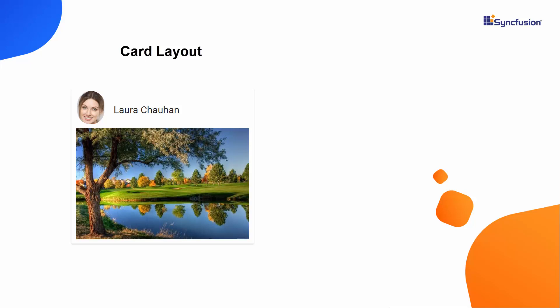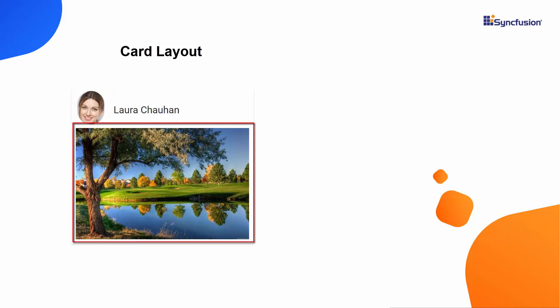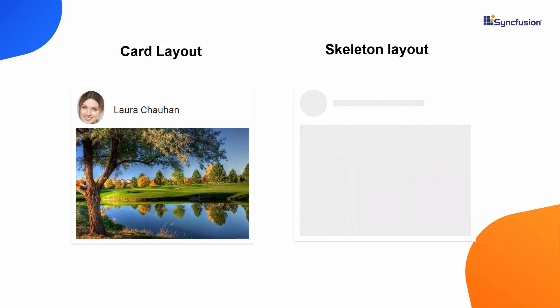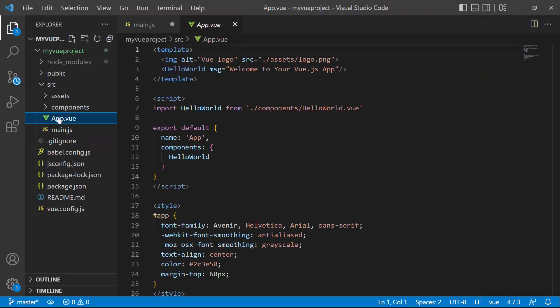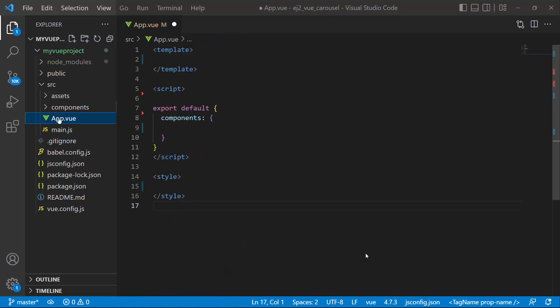It has a profile picture, profile name, and post content in it. I am going to show you how to display the skeleton layout for this card content. For that, first I need to design the card. So let me open the app.vue page and remove the default code on this page.